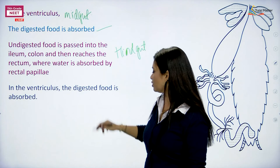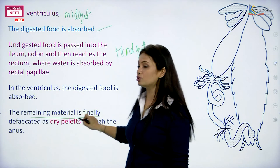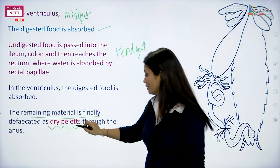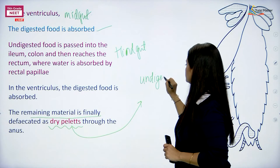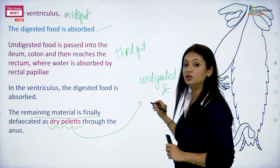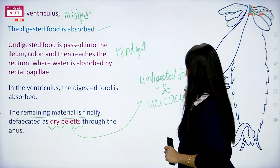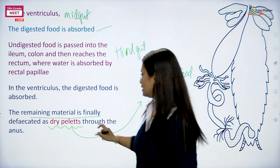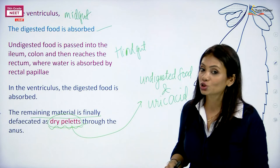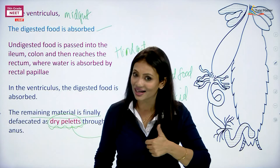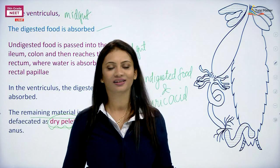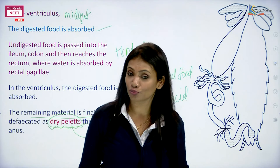Digested food is absorbed in the ventriculus; undigested food is passed to the hindgut. The remaining material is expelled through the anus as dry pellets. These dry pellets contain two things: undigested food and uric acid. Water content is very minimal, which is why it is eliminated as pellets rather than liquid urine. This marks the end of the digestive system of the cockroach. Please like and share the channel, subscribe, and stay tuned for the next lecture on the next system of the cockroach. Stay home, stay safe.